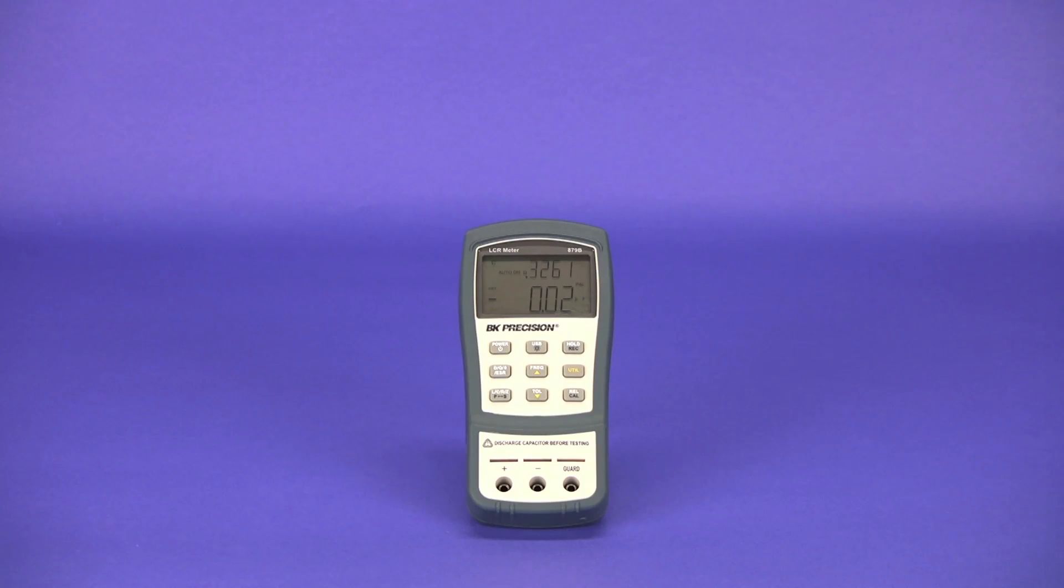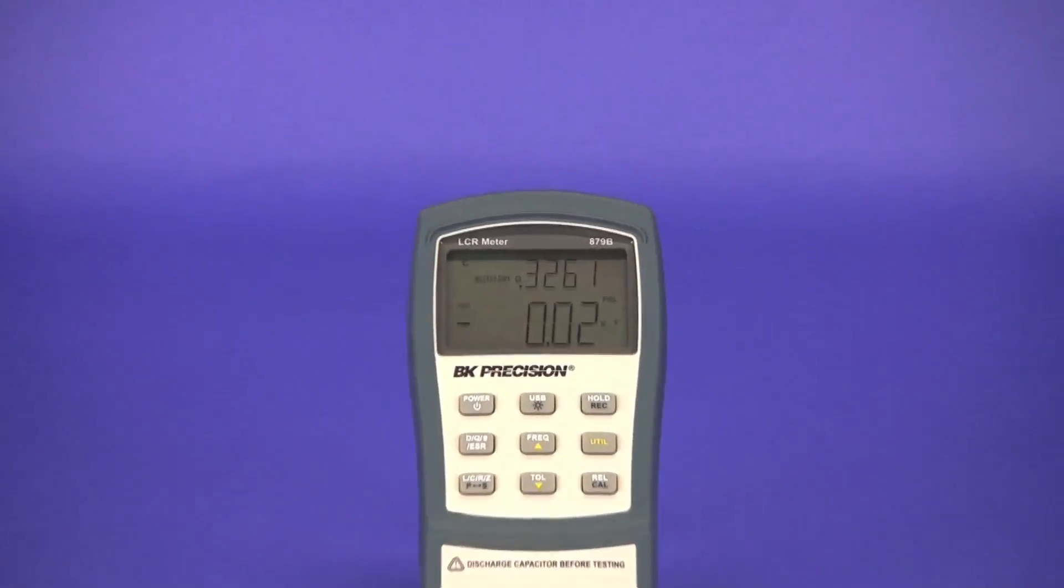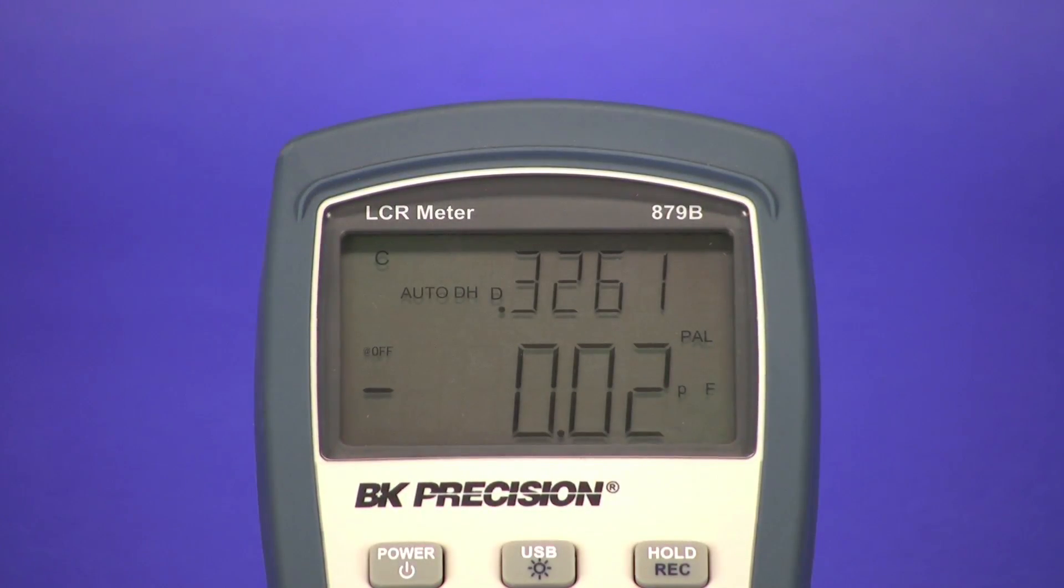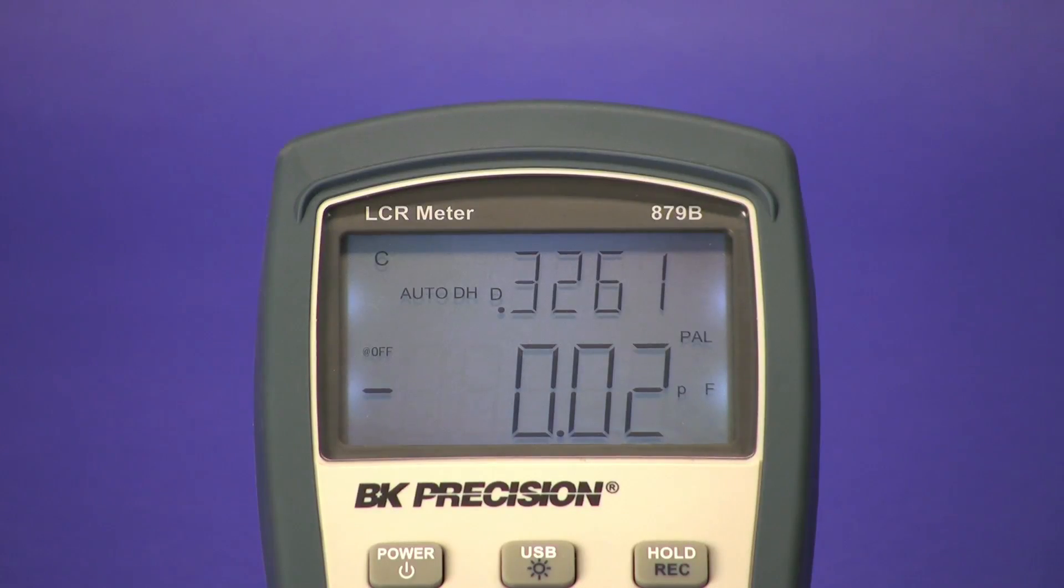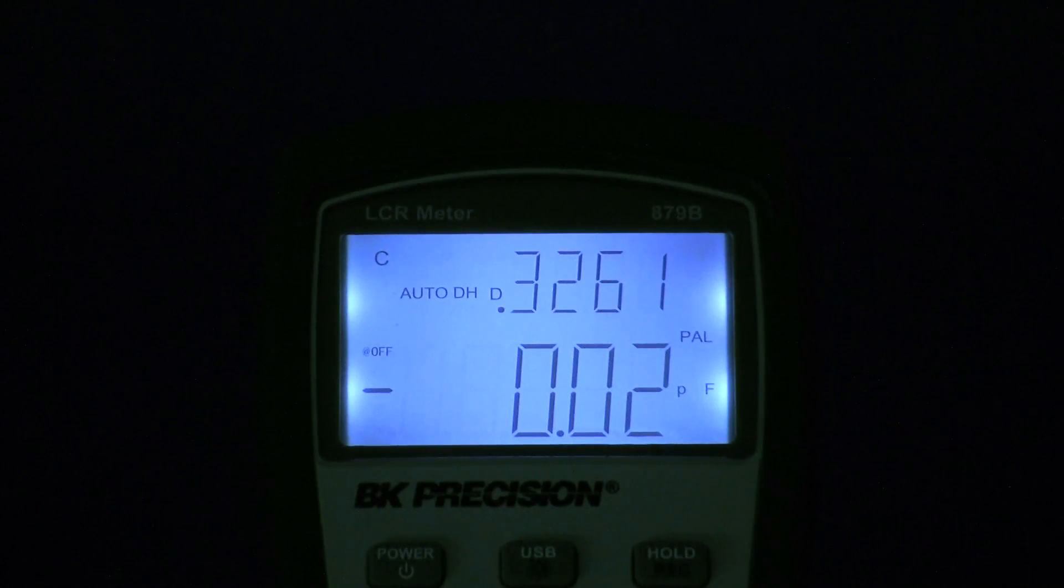Both meters feature large, easy to read primary and secondary displays with 40,000 and 10,000 counts respectively. The model 879B's display features a bright, evenly lit backlight.